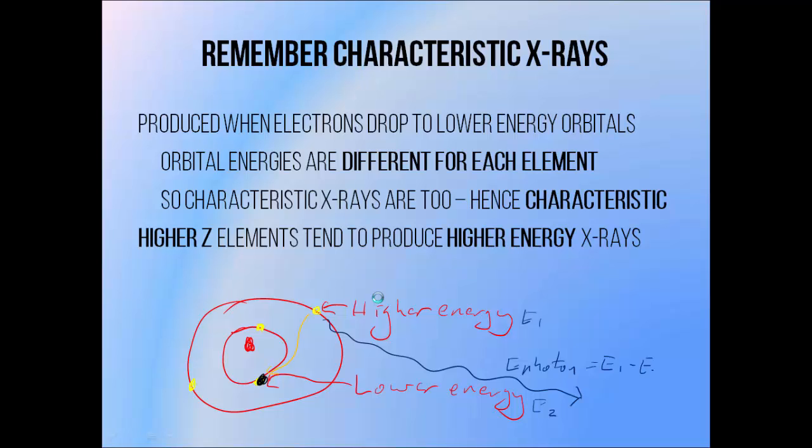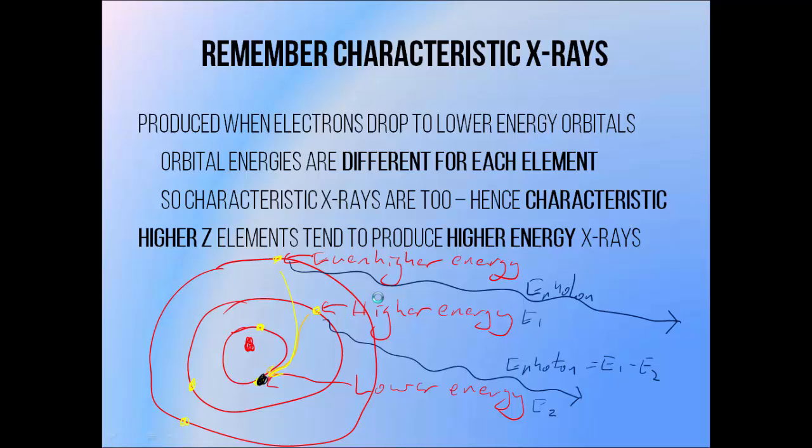So this photon energy is equal to the difference between the energy of the orbital that the electron is moving from and the orbital that it's moving to. The energy of the orbitals surrounding a nucleus depends on the number of protons within the nucleus, therefore on the atomic number. So each element will have different energies associated with those electron orbitals, and therefore its own specific set of X-ray energies that can be emitted when electrons transition from one to the other. It's a characteristic of each element, hence the name characteristic X-rays. Higher atomic number elements tend to have a greater range of allowed transitions and therefore are able to produce higher energy characteristic X-rays.